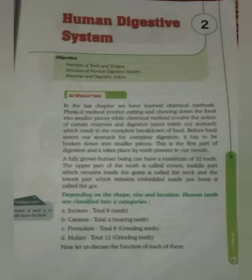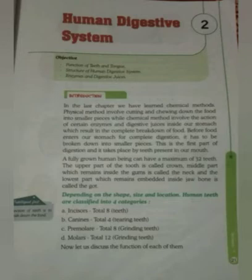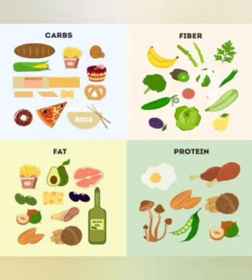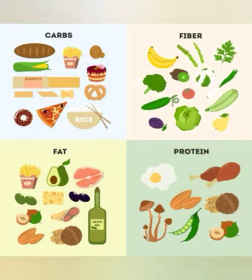The breaking down of complex components of food into simpler substances is called digestion. The food we eat is very complex. It contains a lot of nutrients like carbohydrates, protein, vitamins, fats, minerals, etc. All these components are complex and they have to be broken down into simpler forms.